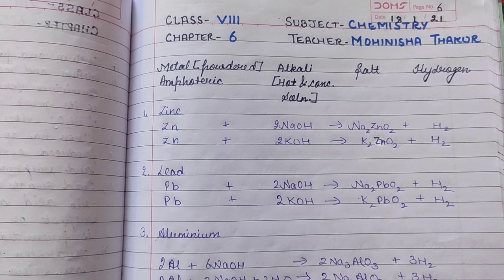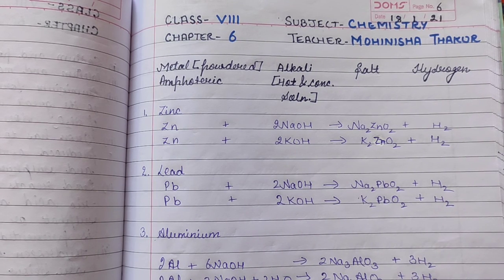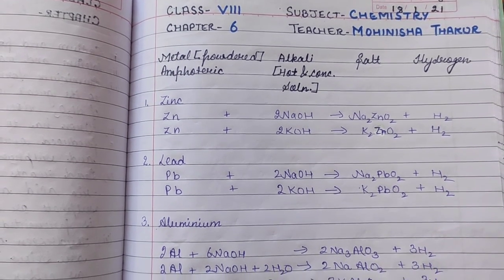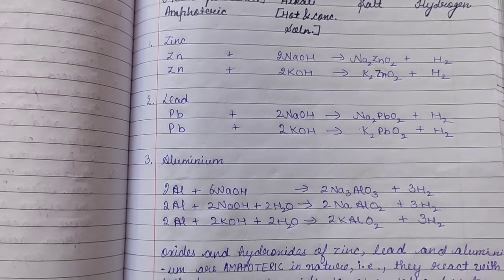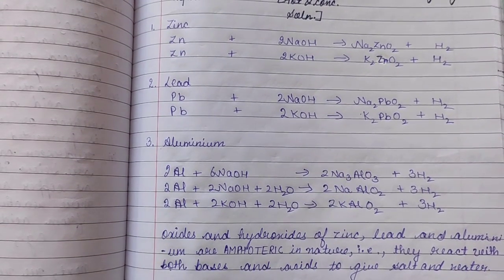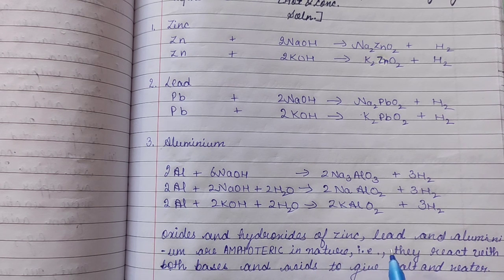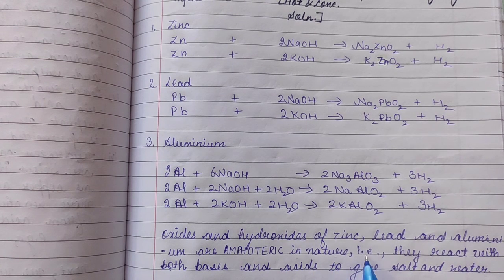You may observe the displacement of hydrogen with alkalis on page number 6 of the notes sent on 18th January 2021. The oxides and hydroxides of zinc, lead, and aluminium are amphoteric in nature — that is, they react with both bases and acids to give salt and water.